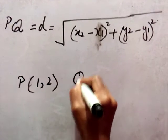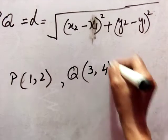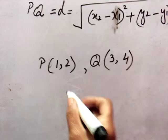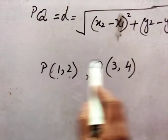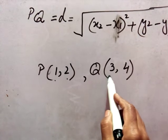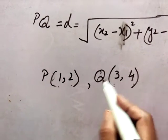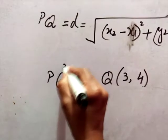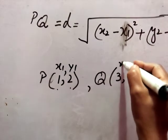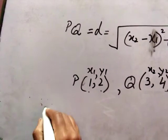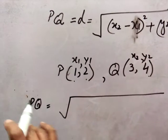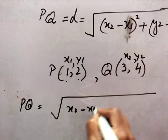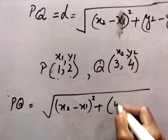For example, if there are two points P(1, 2) and Q(3, 4): the X coordinate of P is 1 and Y coordinate is 2; for Q, the X coordinate is 3 and Y coordinate is 4. We name them: P is (X1, Y1) and Q is (X2, Y2). Now we find the distance PQ using the formula: PQ equals the square root of (X2 minus X1) squared plus (Y2 minus Y1) squared.